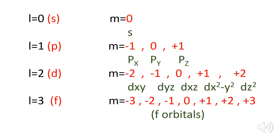The three p orbitals are px along the x-axis, py along the y-axis, and pz along the z-axis. When l equals two — the d subshell — the magnetic quantum number ranges from minus two to plus two, giving five d orbitals: dxy, dyz, dxz, dx²-y², and dz². When l equals three — the f subshell — the magnetic quantum number ranges from minus three to plus three, giving seven f orbitals.